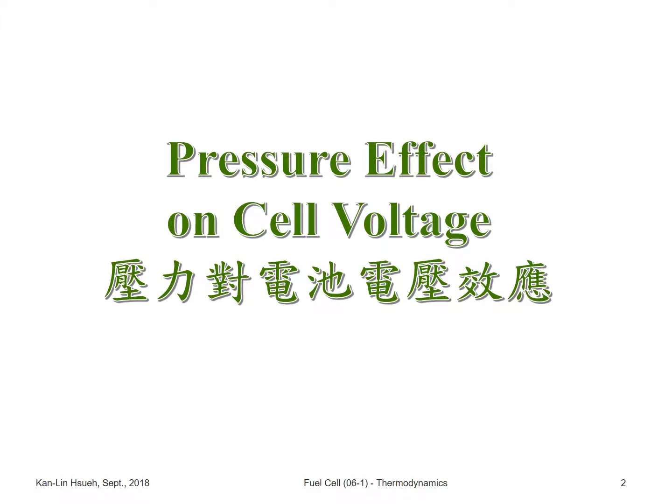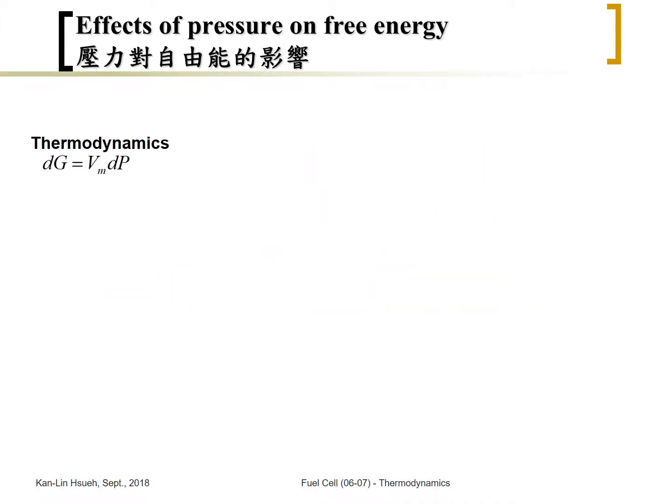The Nernst equation talks about the free energy as a function of concentration or reactant activity, so we are able to evaluate the pressure effect on the cell voltage. From thermodynamics, if temperature is constant, the free energy change at a different pressure can be written using this formula. We also consider the ideal gas law, PV = nRT, where the molar volume V_m is the volume for one mole of reactants.